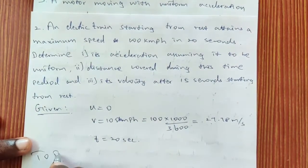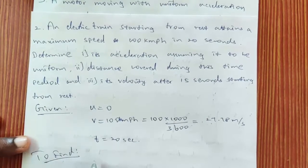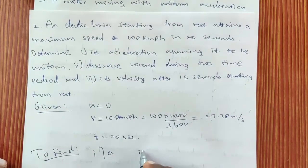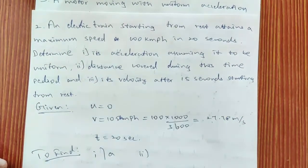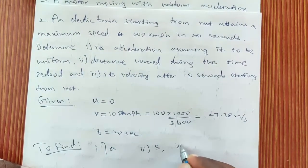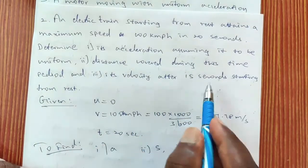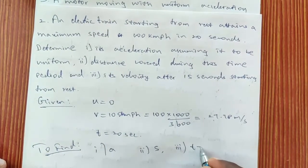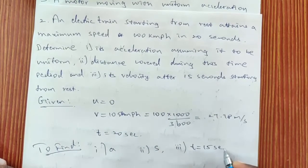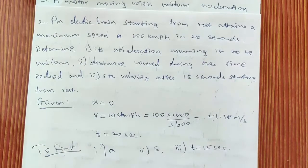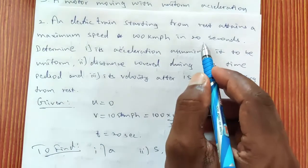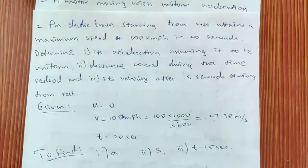We need to find acceleration a, distance s, and the velocity after 15 seconds. Note that at 20 seconds the velocity is 100 km/h, so if the time is reduced to 15 seconds, the velocity will also be reduced. We need to find that final velocity.